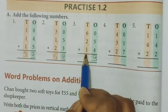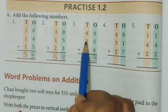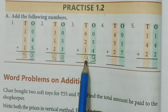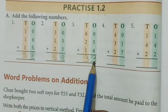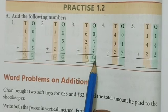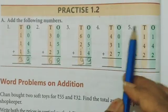6 plus 2, 8. 8 plus 1, 9. That means 60 plus 25 plus 14 equals to answer 99. Very good.